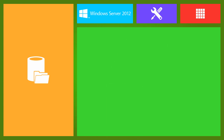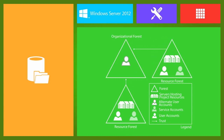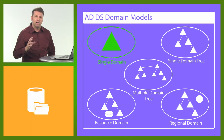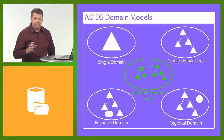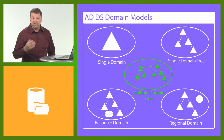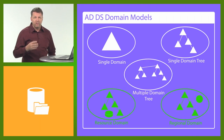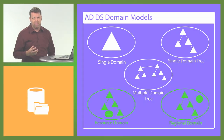Another option is a resource forest. The resource forest is common with directory-integrated applications such as Microsoft Exchange. In other cases, you might require multiple domain trees. The primary reason for implementing multiple domain trees would be that each tree has a separate DNS namespace. This is useful in acquisitions, mergers, or in other instances that might require different domain names within the organization. Regional domains and resource domains are really a type of single domain tree model.